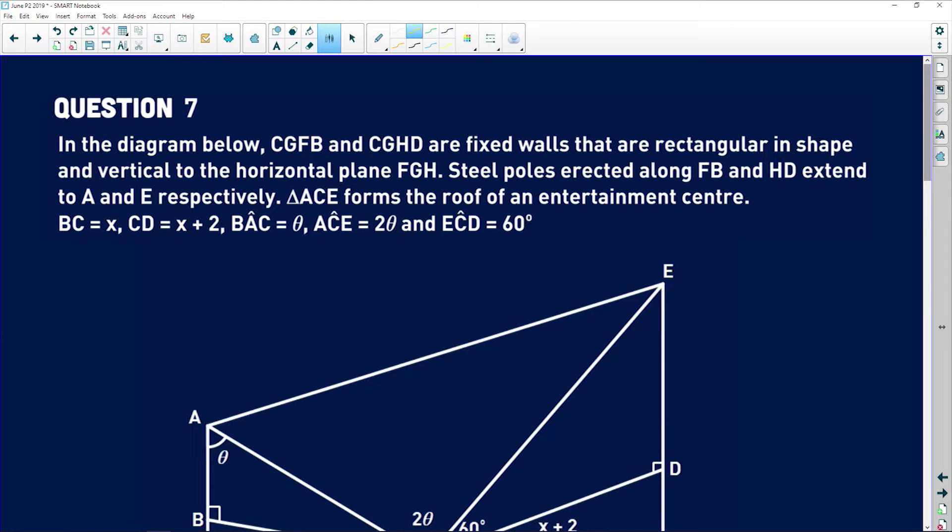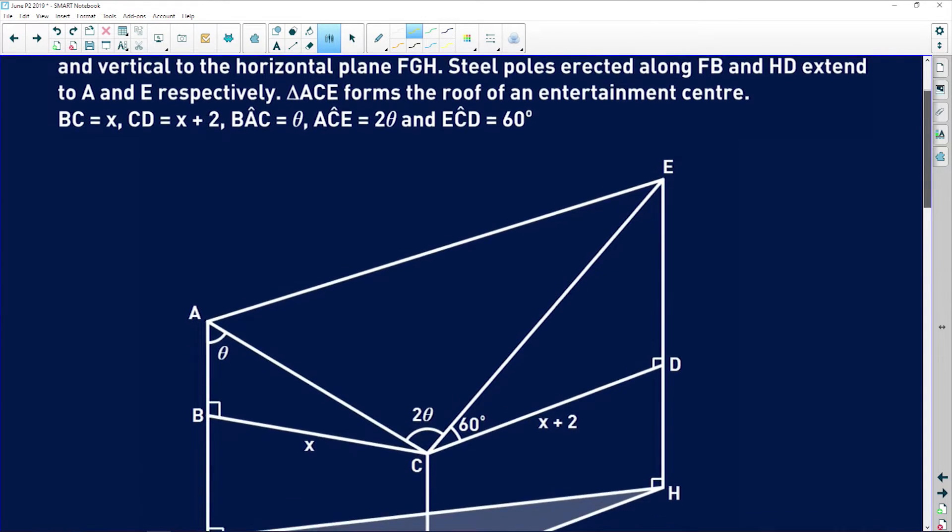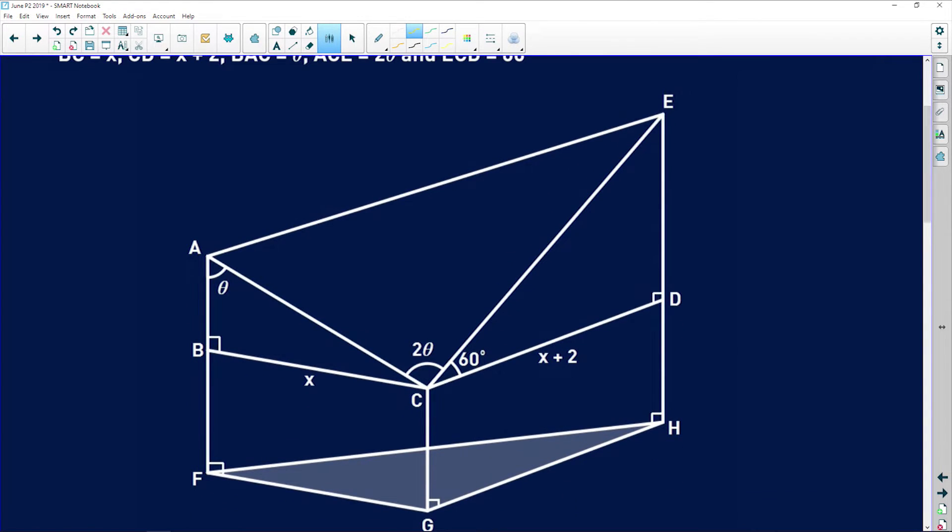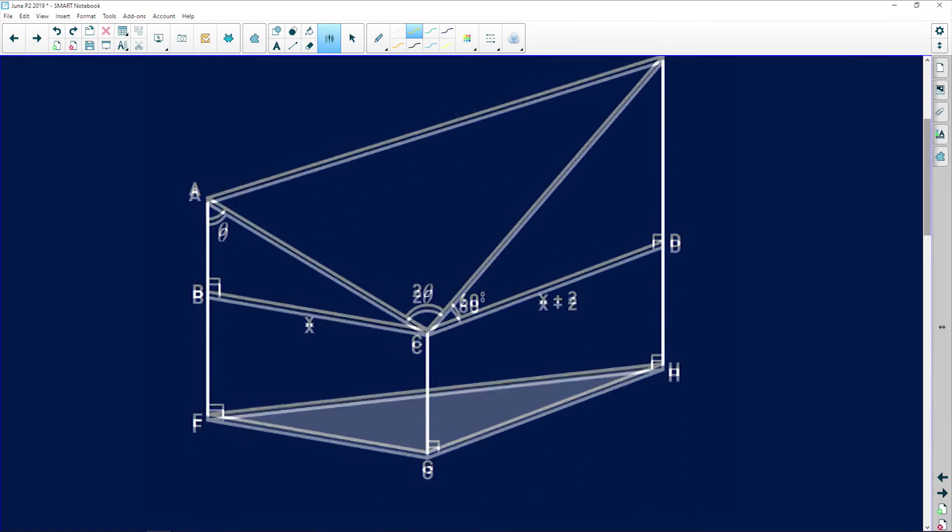It says in the diagram below, CGFB and CGHD are fixed walls that are rectangular in shape and vertical to the horizontal plane FGH. So FGH is this floor here, and we have this rectangular wall over here which is perpendicular to the floor, and this rectangular wall which is also perpendicular to the floor.